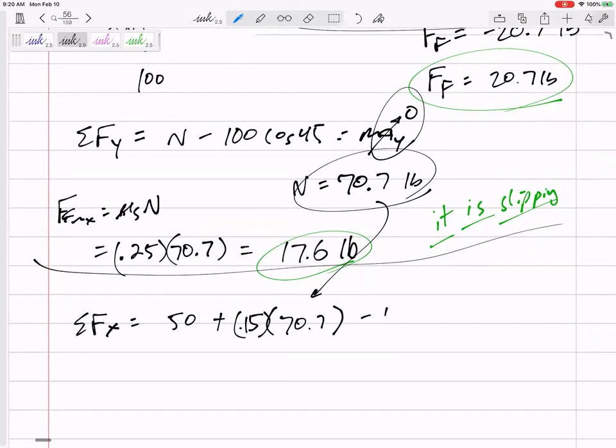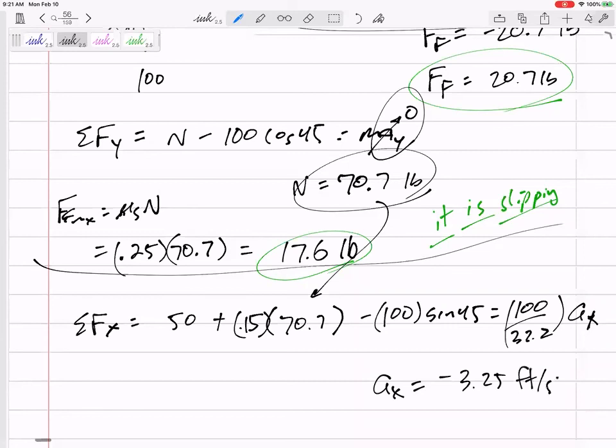Minus 100 sin 45 equals mass. Be careful, that 100 is the weight, so divide by 32.2 times the acceleration in the X. Acceleration in X = -3.25 feet per second squared.